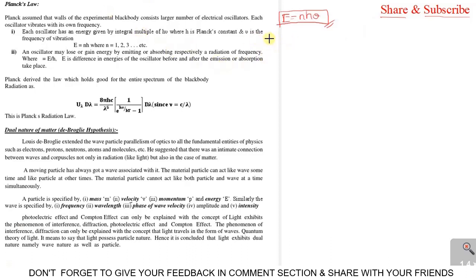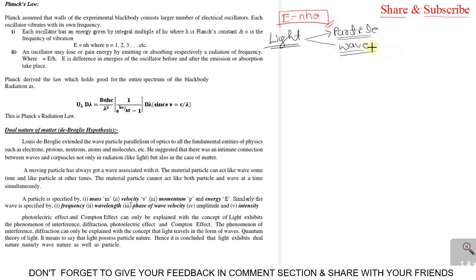As we already know from PUC, light has a dual nature — it may behave as a particle and sometimes it may behave as a wave. To prove that, we have conducted so many experiments. For particle nature and wave nature we conducted many experiments, like Young's double slit experiment for wave nature. So many scientists tried to explain light has a particle nature.